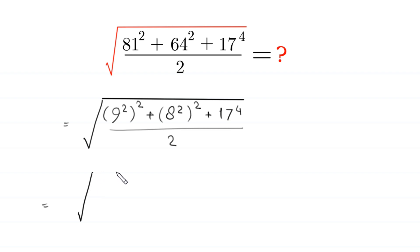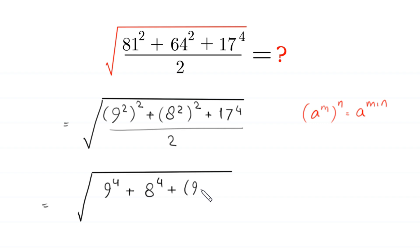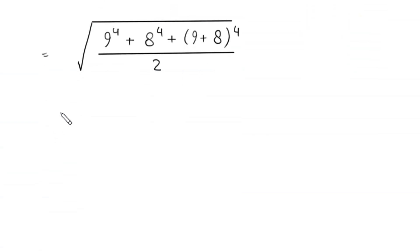Next, using the power rule — a to the power m, whole to the power n, equals a to the power m times n — this 9 squared whole squared becomes 9 to the power 4, plus 8 squared whole squared becomes 8 to the power 4, plus 17 can be written as 9 plus 8, whole to the power 4, divided by 2.